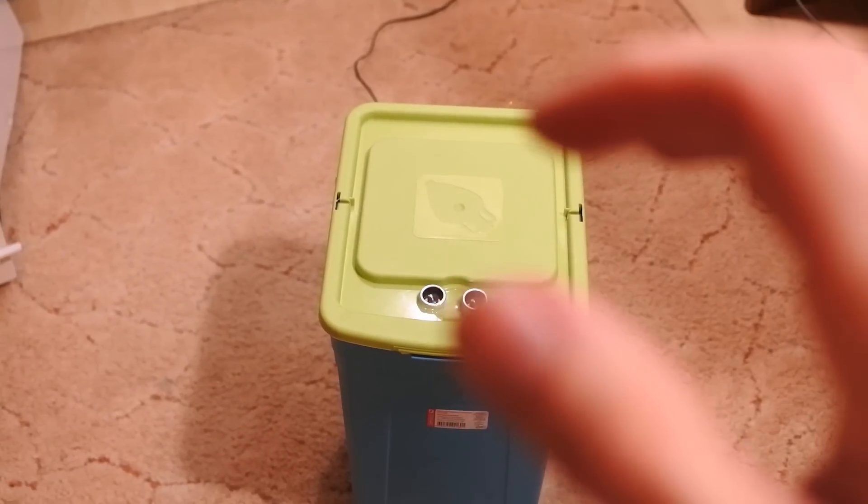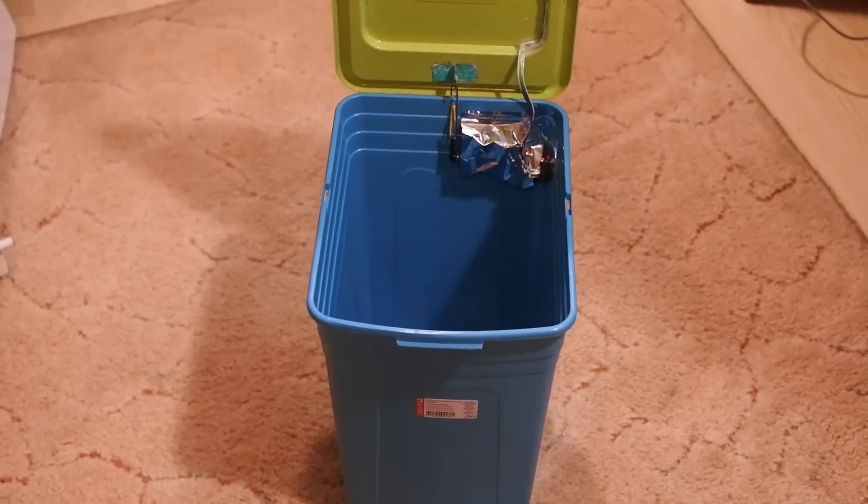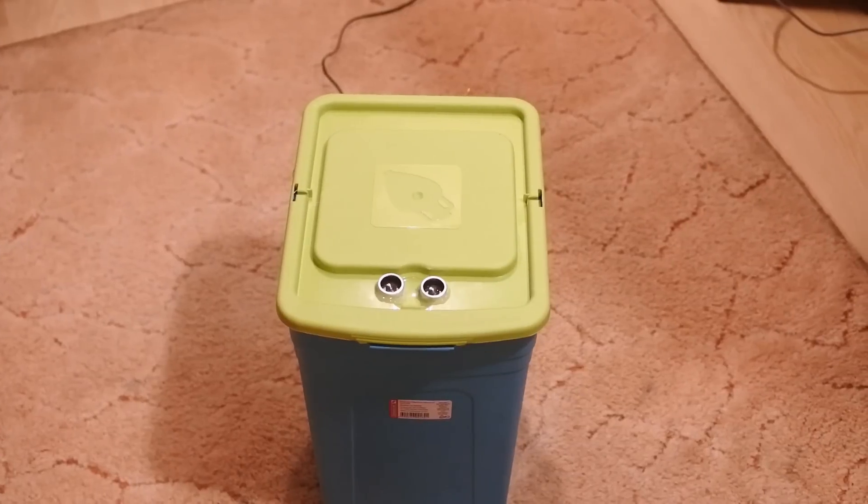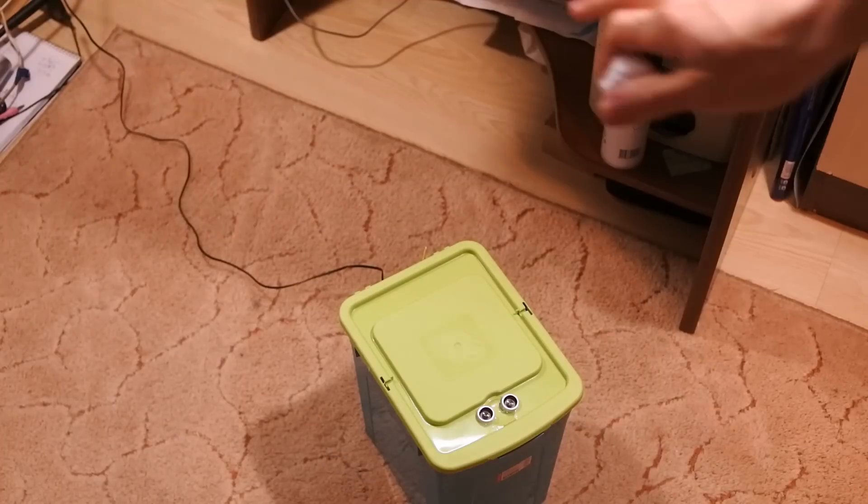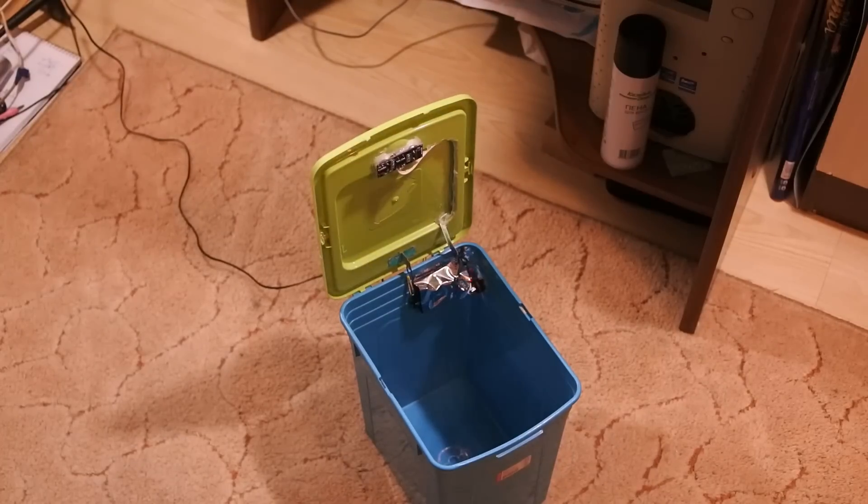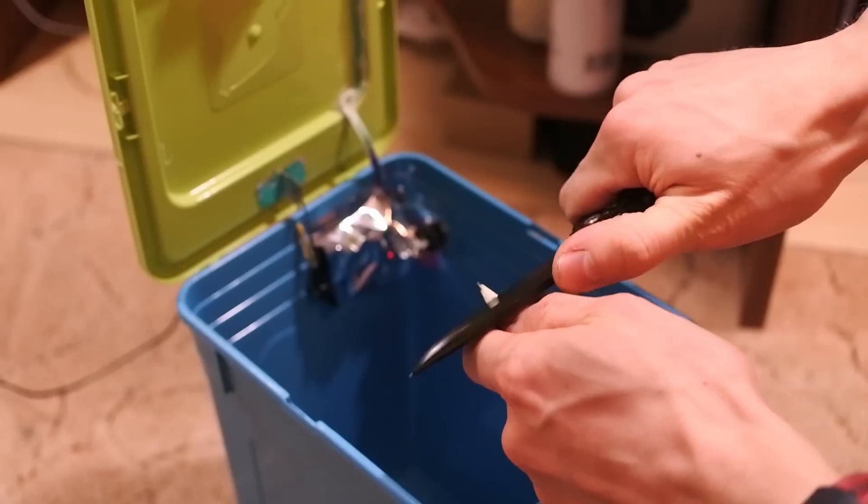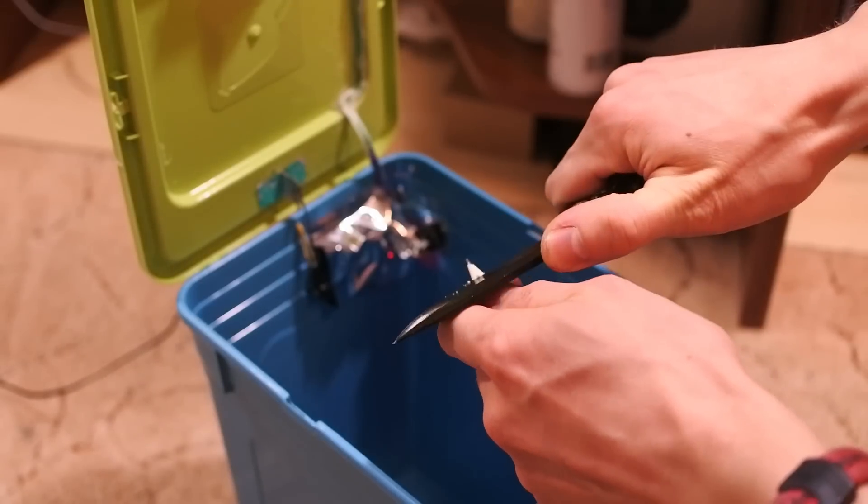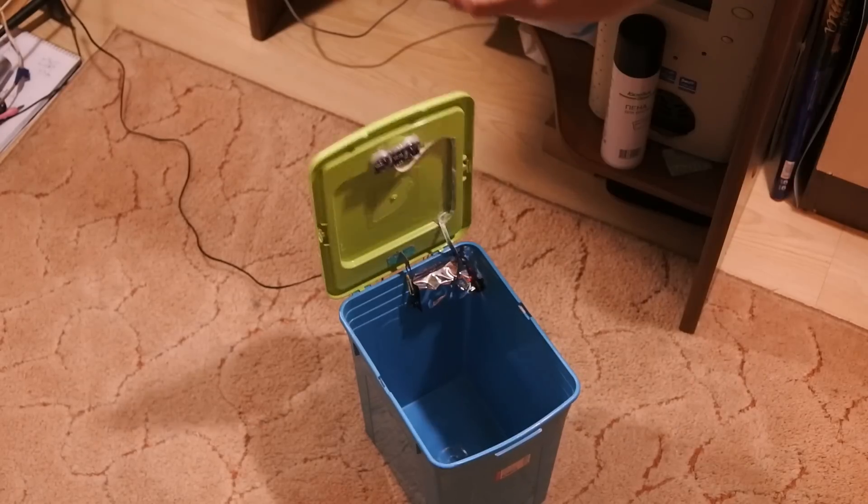The trash can will open its cap for 10 seconds if you place your hand from 10 to 30 centimeters above the cap, and for 3 seconds if your hand will be at the distance from 30 to 70 centimeters. This mode is for fast throwing things out.